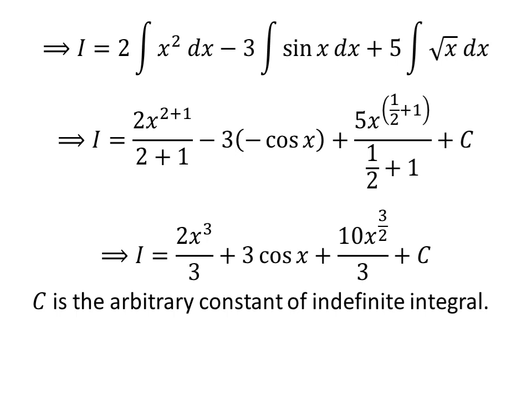Further simplification gives us i is equal to 2 times cube of x upon 3 plus 3 times cosine of x plus 10 times x raised to the power of 3 upon 2 upon 3 plus capital C.